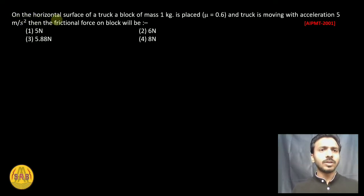On the horizontal surface of a truck, a block of mass 1 kg is placed. Mu is equal to 0.6 and the truck is moving with acceleration 5 meter per second square. Then the frictional force on the block will be - so we have to find the friction force acting on the block of the truck.